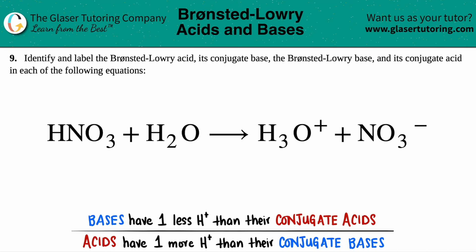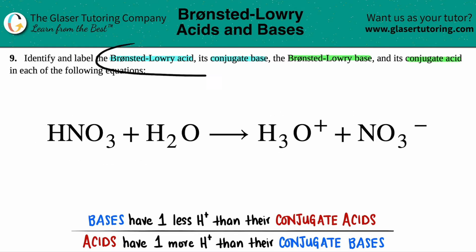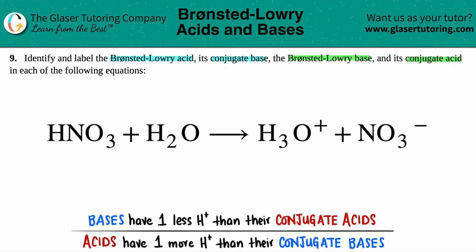Number nine: identify and label the Bronsted-Lowry acid, its conjugate base, the Bronsted-Lowry base, and its conjugate acid in each of the following equations. We have to find out these four things in HNO3 plus H2O, which yields H3O+ plus NO3-.